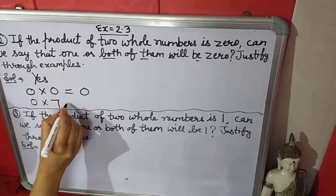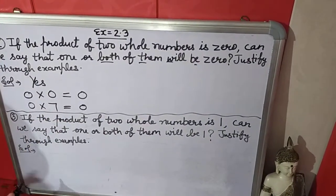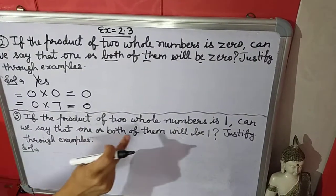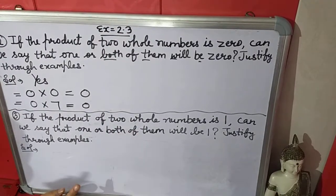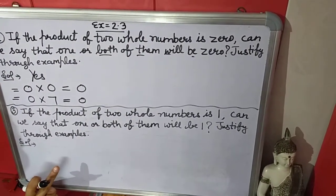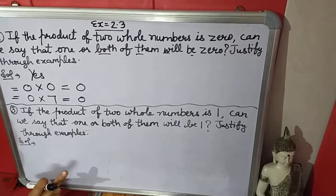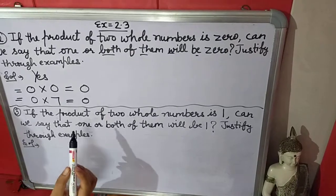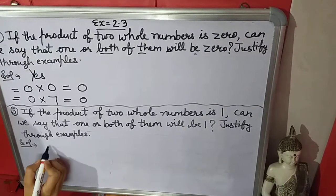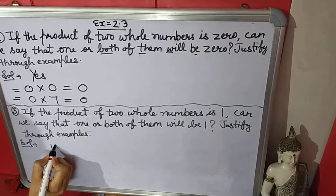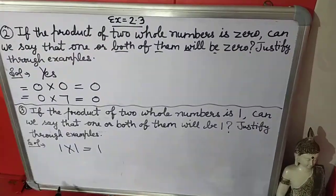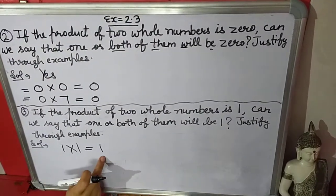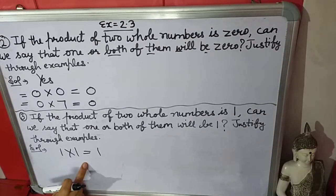Now the third question: if the product of two whole numbers is one, can we say that one or both of them will be one? Justify through examples. If we multiply any two whole numbers and get product one, it will be 1 multiplied by 1. The product will be one. There is only one case when we will get the product as one — when both numbers will be one.